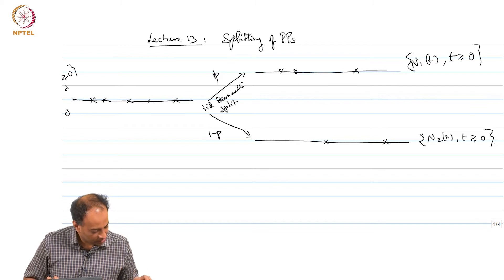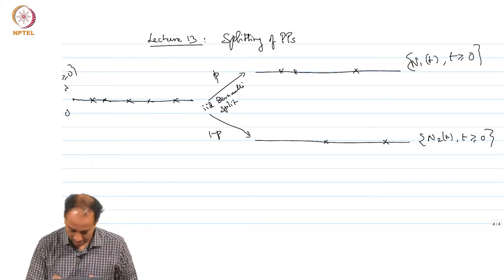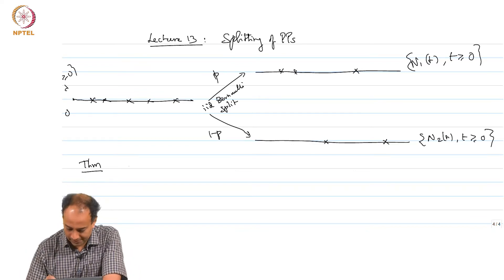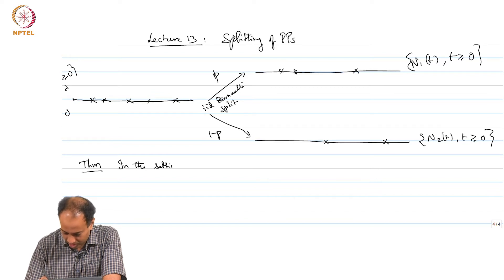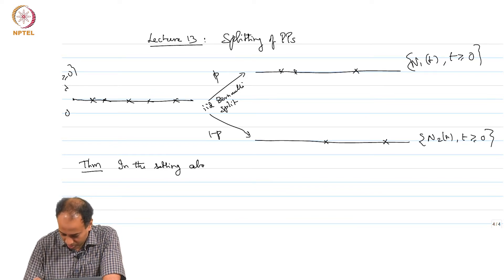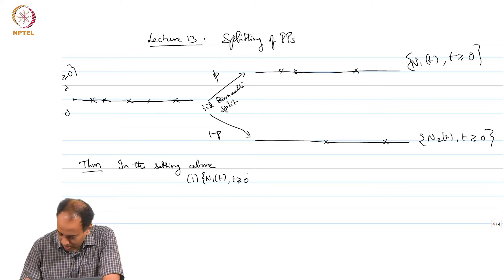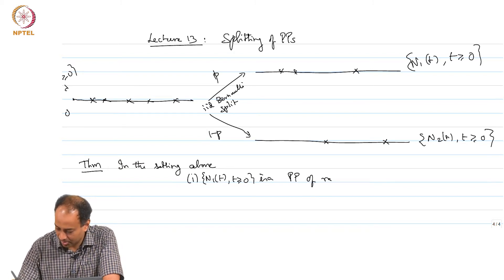That is the main result. In the setting above, N1(t) is a Poisson process of rate lambda·p.